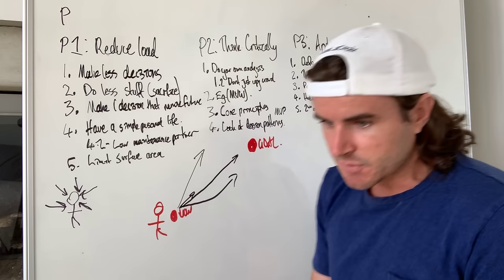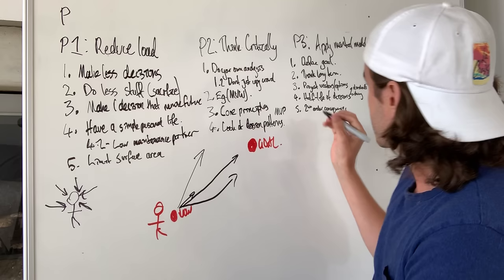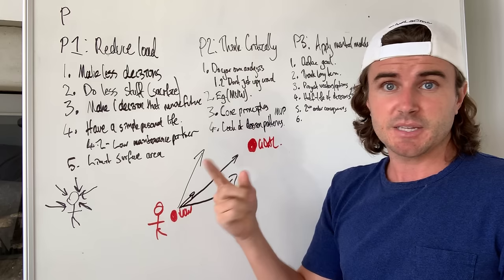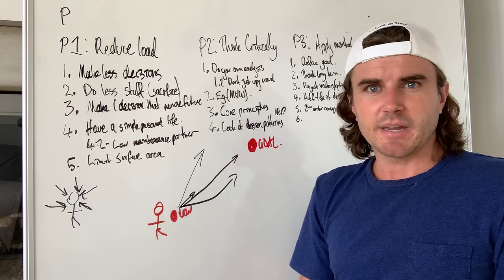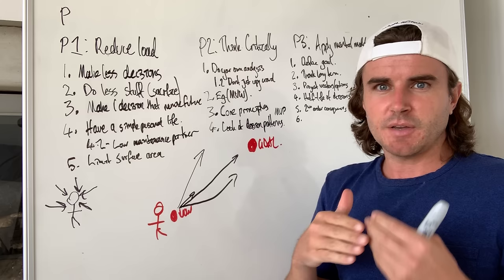Mental Model Five: consider second-order consequences. I actually already explained this partly with the A's hire A's, B's hire C's example. Second-order consequences means that if you do something now, it's going to have a downstream effect that you're not going to be fully aware of. It comes from chemistry — when you do something, it doesn't just stop at the first-order effect.